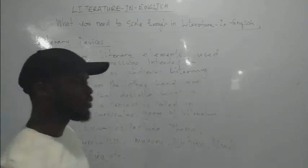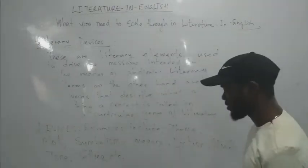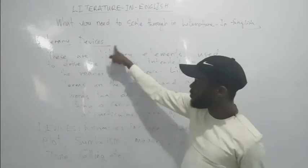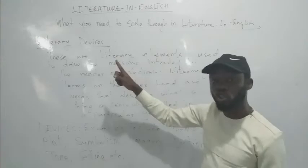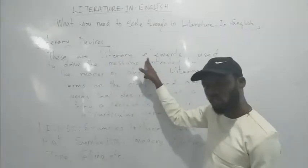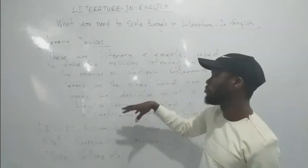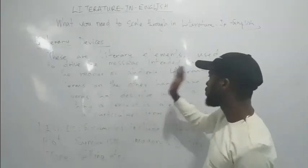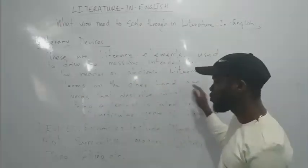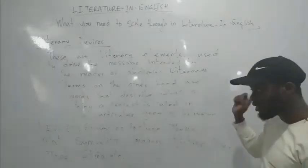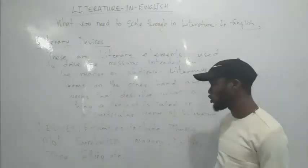I'm going to pick them one after the other. Devices are literary elements — those words we use to drive the message to the reader or the audience. Literary terms, on the other hand, are those words that describe what a theme or concept is called in a particular genre of literature — maybe drama, prose, or poetry.